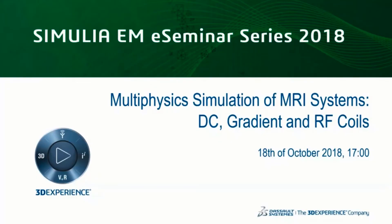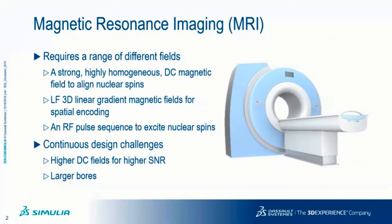Hello everybody, welcome to today's e-seminar on multiphysics simulation of MRI systems. MRI systems aim to get a three-dimensional image from nuclear spins. As a brief reminder, we basically need an overlay of three different magnetic fields: a very strong and highly homogeneous DC static field, a low-frequency gradient field for spatial encoding to get a 3D image, and finally a radio frequency pulse that excites the spin so that we get a response and can create an image. The technology itself has been known since the 1960s.